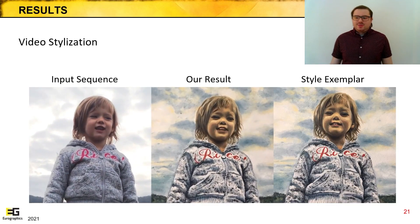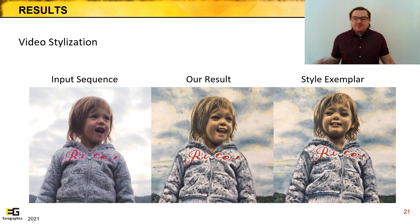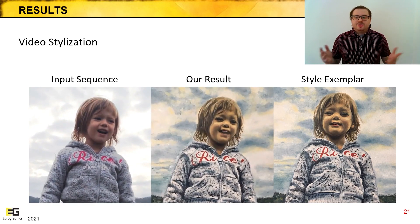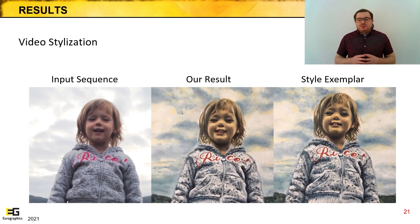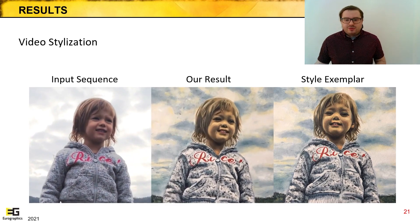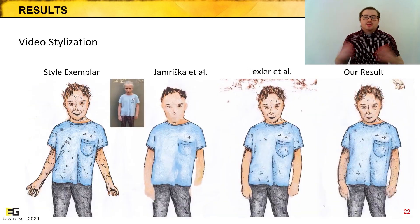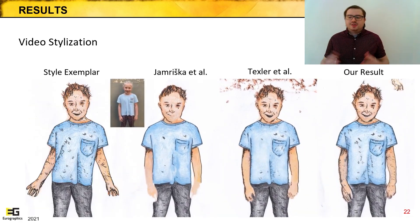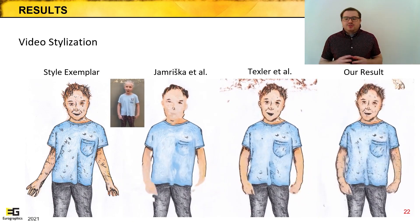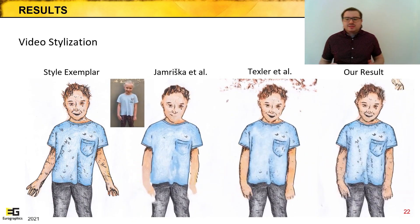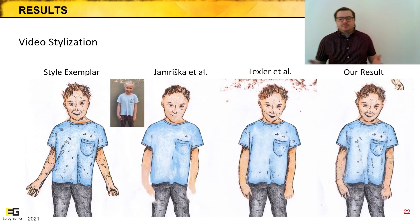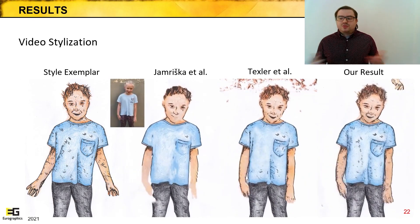We can now demonstrate some results. In this sequence, we can observe that our method faithfully preserves the style exemplar throughout the entire sequence — especially note how the details on hair and face remain crisp. Furthermore, the sequence produced by our method is temporally stable with minimal flickering, a byproduct of computing the style loss evenly over all frames in the sequence. Here we see another sequence compared to Yamrishka and Texler. Yamrishka produces a significant washed-out look as the sequence moves further from the keyframe; to a lesser extent this is also true for Texler, with missing details on the arms. Our method retains even smaller details for the full length of the sequence.